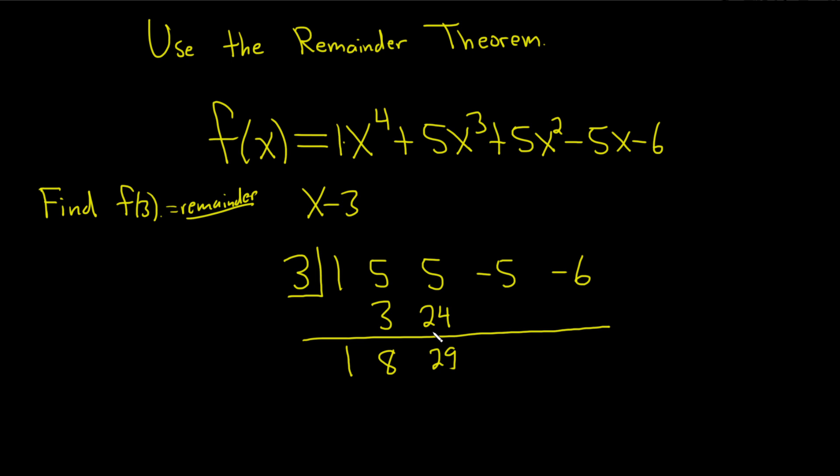29 times 3. What is that going to be? Just be really careful here. You get 87. Then you add that to negative 5 and you get 82. And then 82 times 3 is 246.